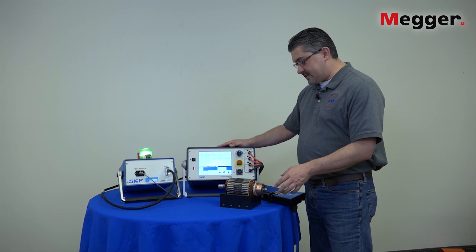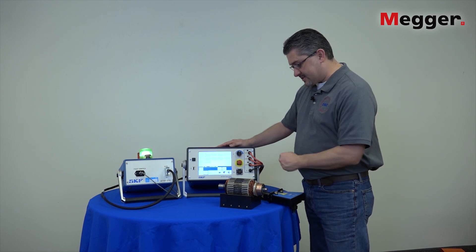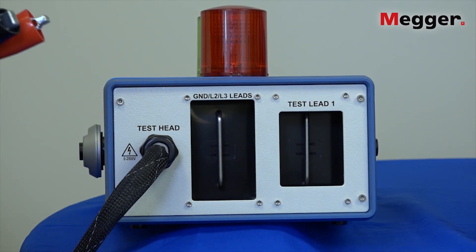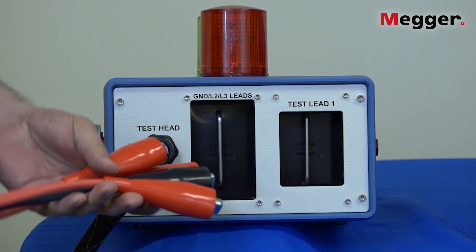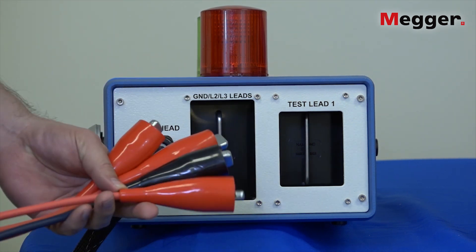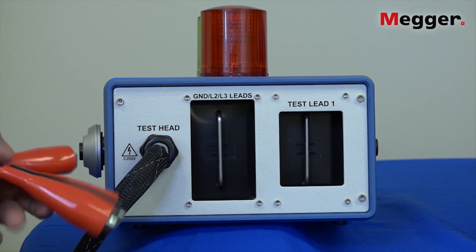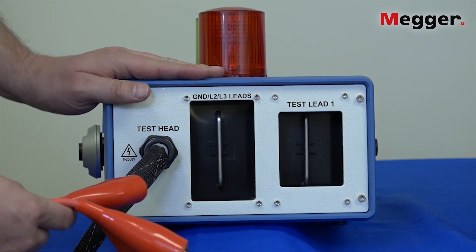Now we'll demonstrate armature testing with the Baker DX tester. I'm going to demonstrate how to connect your high voltage leads from the AWA or from your DX to the AT101ZTX armature test accessory.